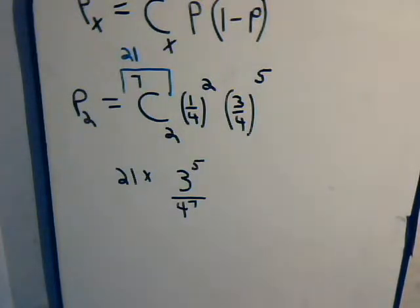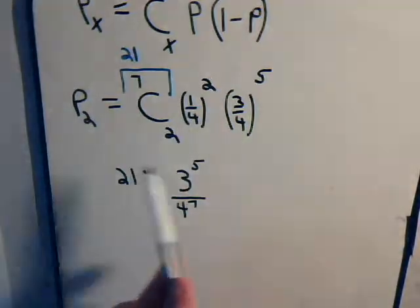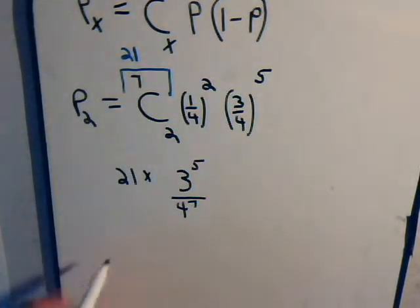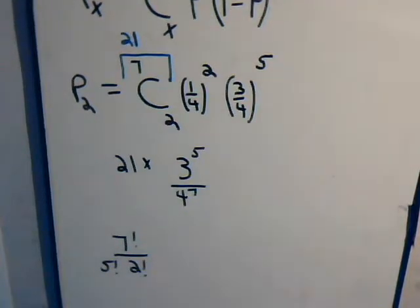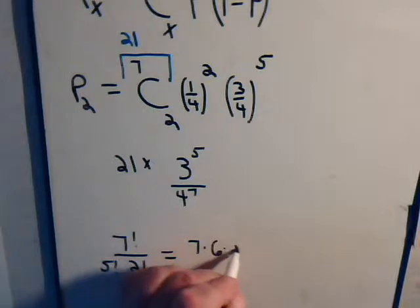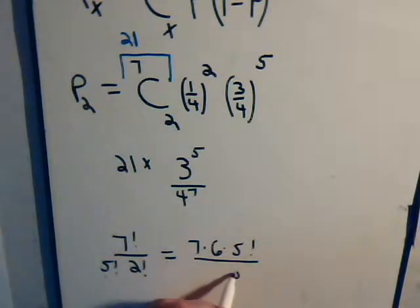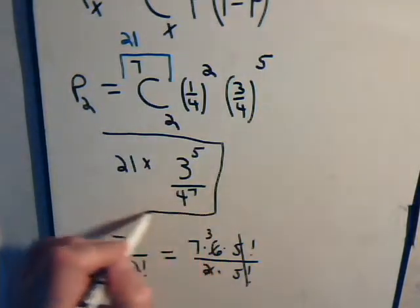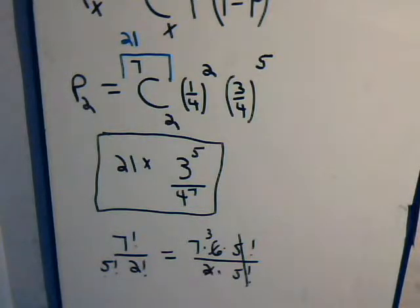We're not going to go through all the arithmetic computations here — we just want to demonstrate the technique. We have three-to-the-fifth times one-to-the-fifth in the numerator, which is just three-to-the-fifth. Then four-to-the-fifth from the failure term, combined with four-squared from the success term, giving four-to-the-seventh in the denominator. The combination C(7,2) gives twenty-one from seven factorial over five factorial times two factorial. Multiply these together and we get our answer. Now let's look more carefully at the formula and see if it makes sense, as we did in the past videos.